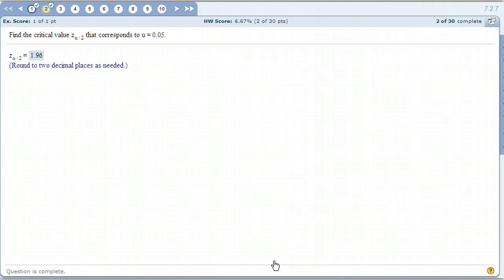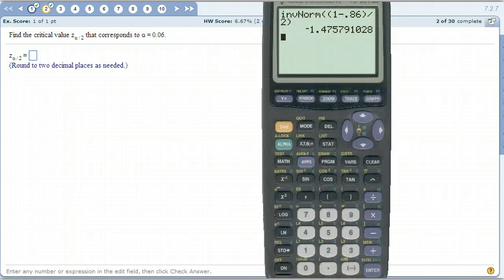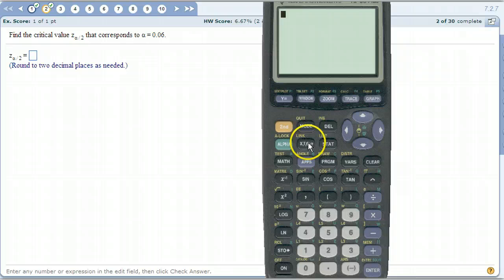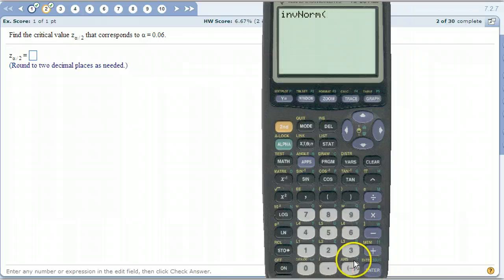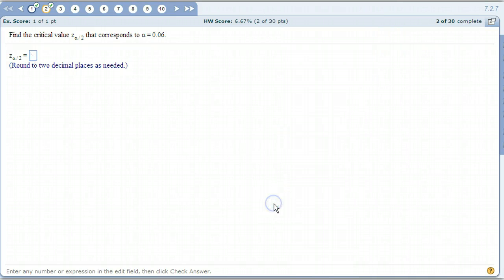Number 2. Remember, that's different. Number 2, they're giving you alpha. So when they give us alpha, we don't have to subtract from 1. So it's just 0.06. That is alpha. And we're going to divide that by 2. Don't worry about the sign. 1.88.